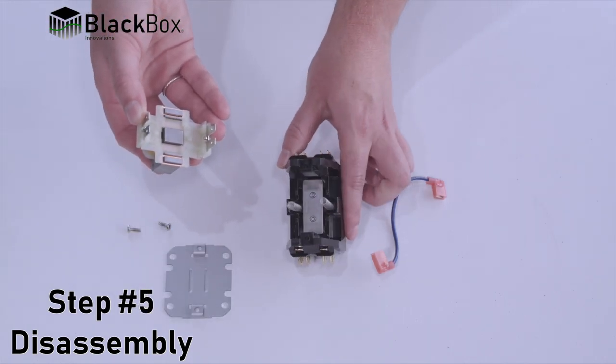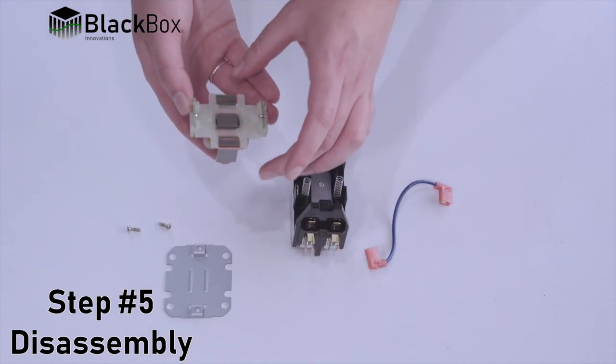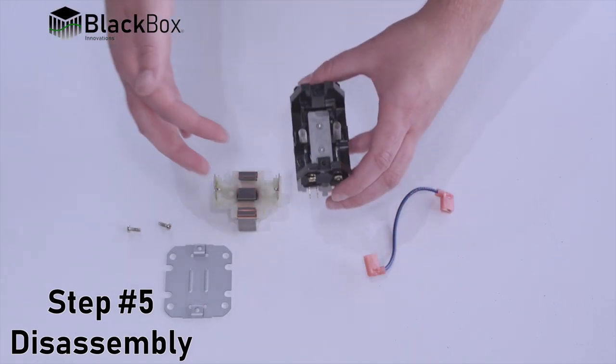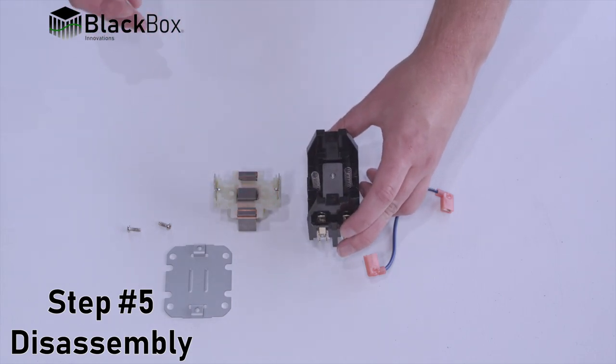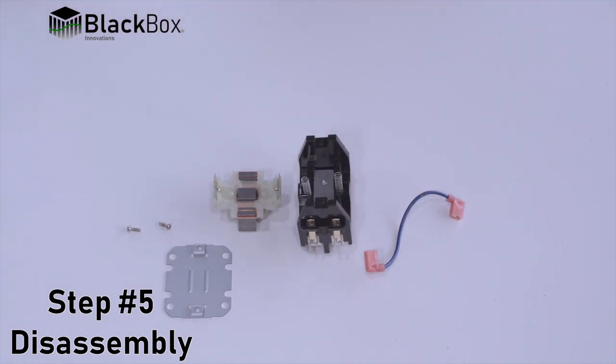Step five, look for debris inside contactor. Lightly sand where core and contactor surfaces meet with a fine grit sandpaper. Ensure there is a clean and flat mating surface. Once done, remove all dust and other particles from the area.